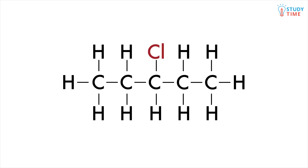For example, a molecule of pentane which has a chlorine atom instead of a hydrogen atom at its third carbon is referred to as 3-chloropentane.